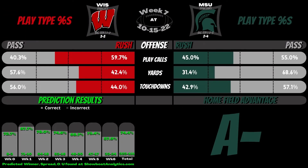Play type percentages purpose is to show how each offense's production takes place between pass and rush, for plays called, yards, and touchdowns.